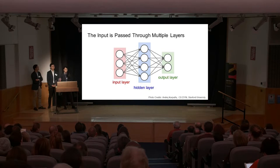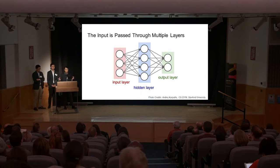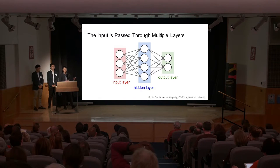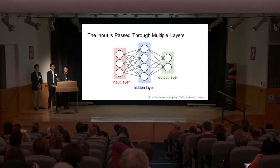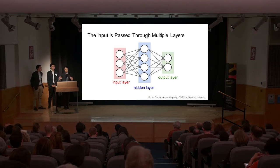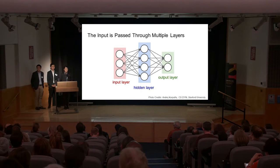How a neural network works is the input is passed through multiple layers in the process of computing a score. Each layer has things called neurons, which are sort of activated by certain features of an image. You could have a neuron that detects cat ears, another that detects cat tails. The concept of a neuron is similar to biological neurons in our brains and spinal cords, although the analogy is not perfect — our biological neurons are much more complex.